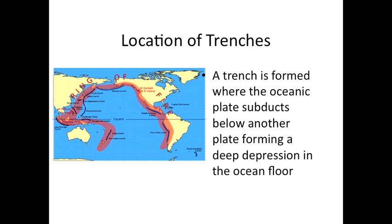Trenches occur anywhere there is subduction — they can happen with ocean-continent subduction or ocean-ocean subduction. A trench is where the land starts to dive below the ocean crust, forming a very deep depression in the ocean floor. It does fill up with magma, but it is a very deep depression. One of the most famous and deepest is the Marianas Trench, near the Philippine Islands. We can see trenches along North and South America where ocean crust is subducting underneath the continent, and also on the ocean floor in the Asia-Pacific region where ocean is subducting under ocean crust.